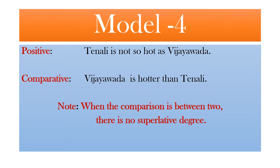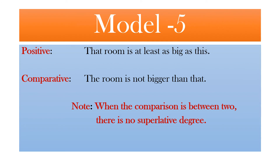Next model — Model 5. The sentence goes like this: 'The room is at least as big as this.' The comparative would be: 'The room is not bigger than that.' Here also the same note applies: when the comparison is between two, there is no superlative degree.